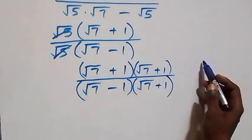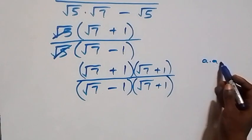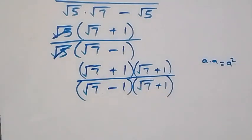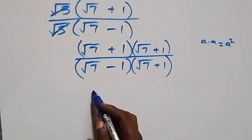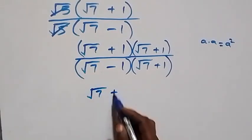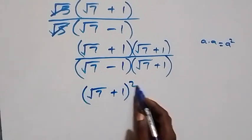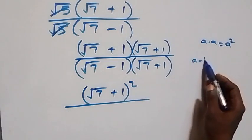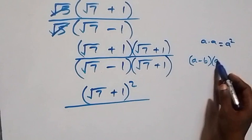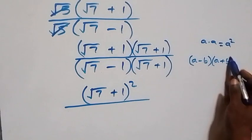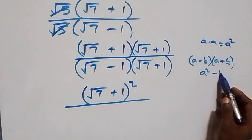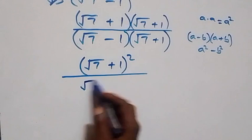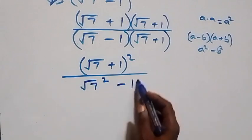What we have up here follows from a × a = a², so we can rewrite the numerator as (√7 + 1) all squared. Then divided by the denominator, which follows from (a - b)(a + b) = a² - b², giving us √7 squared minus 1 squared.